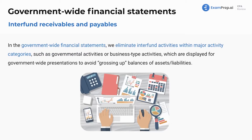Inter-fund receivables and payables — similar to intercompany eliminations in corporate accounting, in government-wide financial statements we eliminate inter-fund activities within major activity categories, such as governmental activities or business-type activities, to avoid grossing up balances of assets and liabilities. Inter-fund receivables and payables are eliminated except for the net residual balances payable between governmental and business-type activities, and receivables and payables to fiduciary funds, which are treated like assets or liabilities from external sources.